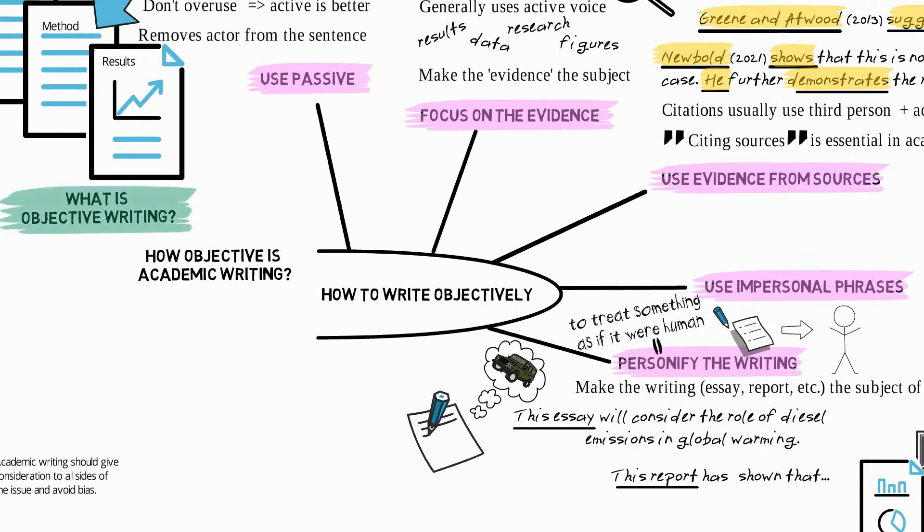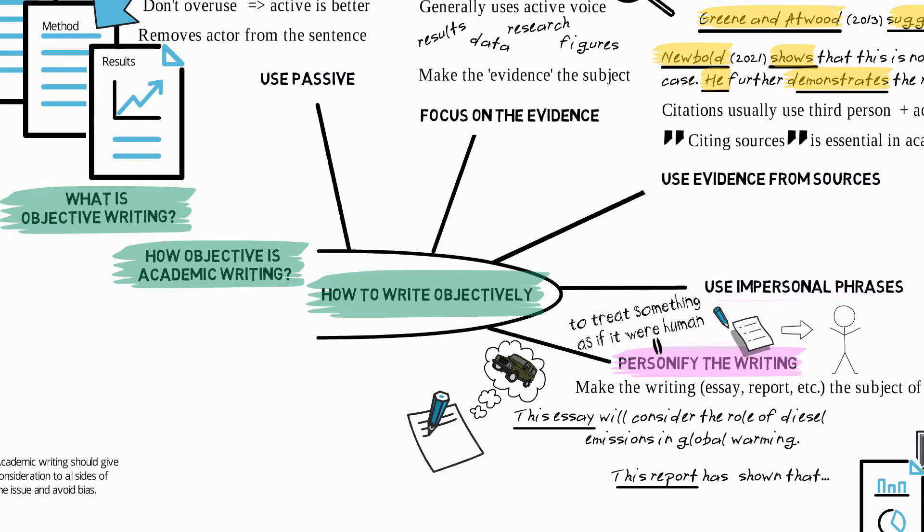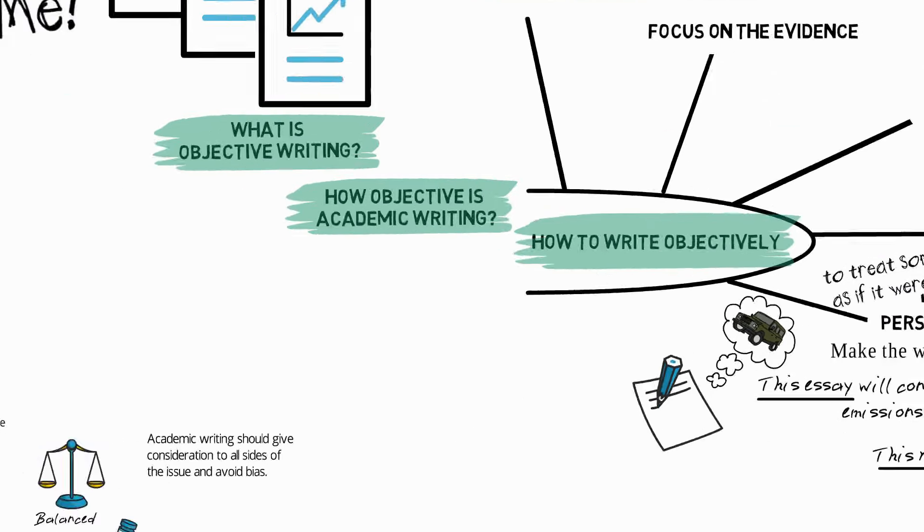So in this video, we've seen what objective writing is, we've considered how objective academic writing is, and we've also seen five ways to write objectively: by using passive, focusing on the evidence, using evidence from sources, using impersonal phrases, and by personifying the writing.